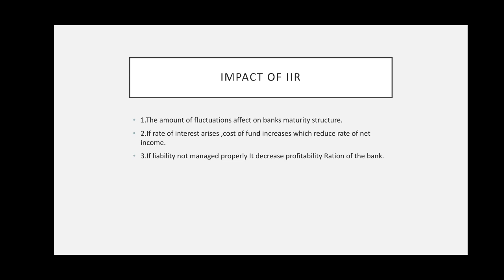The second impact: if the rate of interest rises, the cost of fund also increases; due to a reduced net income rate, it directly affects net income. Always remember — if the rate of interest increases, the cost of fund also increases, which directly affects net income. The third impact: if liabilities are not managed properly, it decreases the profitability ratio of the bank. Whether it is demand or time deposit, most questions arise in the context of time deposit because you are giving a fixed rate of interest. These are the three major effects of interest rate risk on banking: it affects the maturity structure, it increases the cost of fund, and if liabilities are not managed properly, it decreases the profitability ratio.